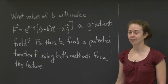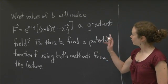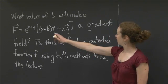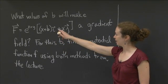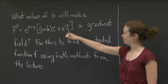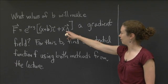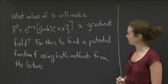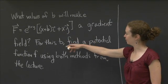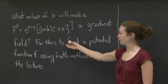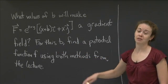Welcome back to recitation. In this video, I'd like us to work on the following problem. What values of B will make this vector field F a gradient field, where F is determined by e to the x plus y times (x plus b)i plus xj. And then once you've determined what values of B will make that a gradient field, for this B, or I should have said these Bs, find a potential function F using both methods from the lecture.